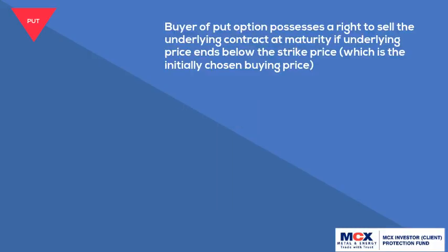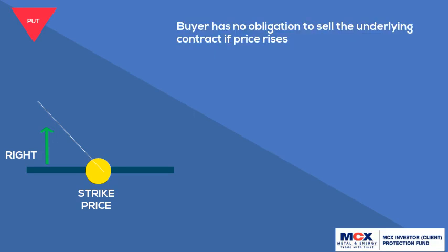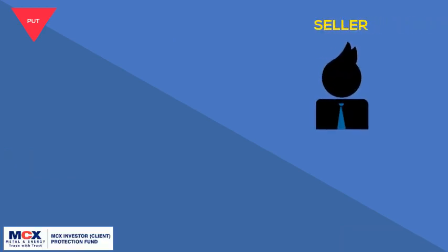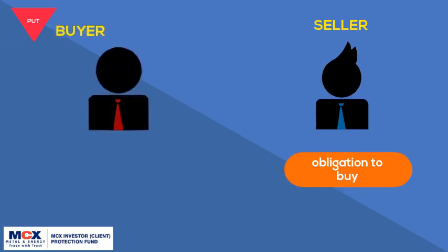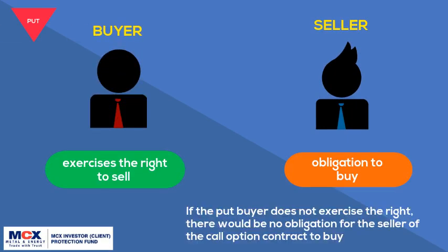The buyer of a put option has the right to sell the underlying contract at maturity if the underlying price ends below the strike price — the initially chosen selling price. The buyer has no obligation to sell the underlying contract at maturity if the price rises. On the other hand, the seller of a put option is obligated to buy the underlying if the put buyer exercises the right. If the put buyer does not exercise the right, the seller is not obligated to buy.